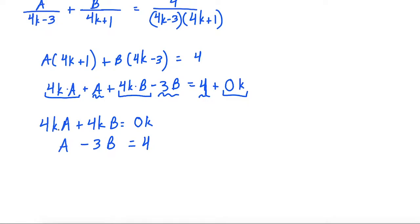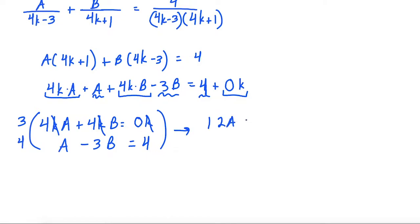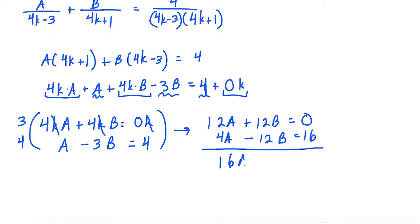We can get rid of the k term since they all share a common k and cancel. To solve this system, we need matching coefficients for either a or b. We multiply the top row by 3 and the bottom row by 4. That gives us 12a plus 12b equals 0 on top, and 4a minus 12b equals 16 on bottom. Adding the system together, we get 16a equals 16, which tells us a equals 1.